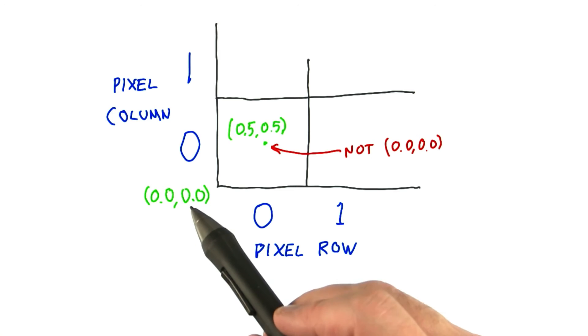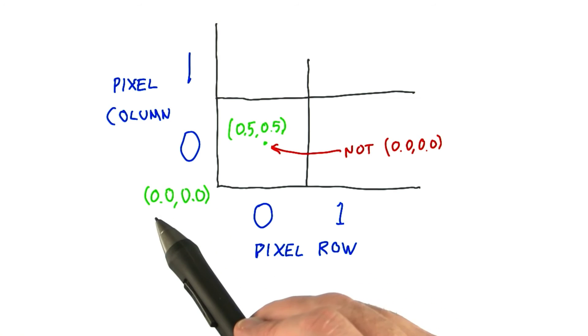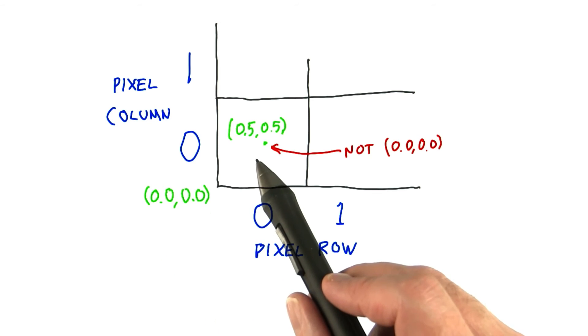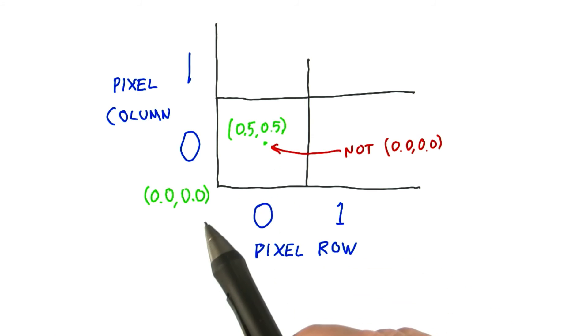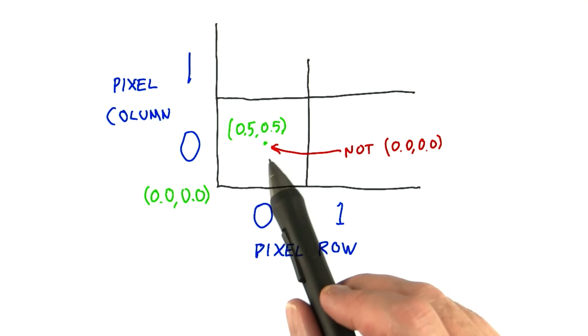While we're talking about 0,0, please note that the lower left hand corner of the lower left pixel is 0,0 in floating point. The center of the pixel is not 0,0, it's 0.5, 0.5. Almost all the time, this is how you want to consider the center of the pixel.